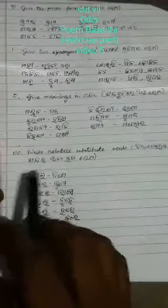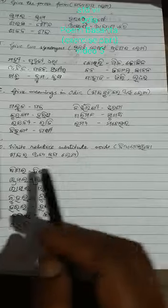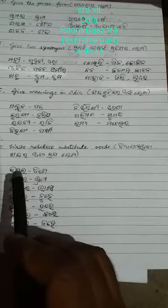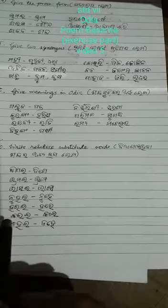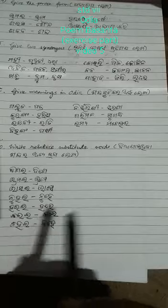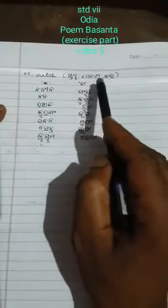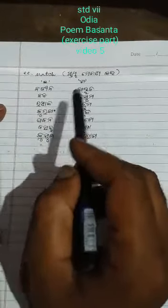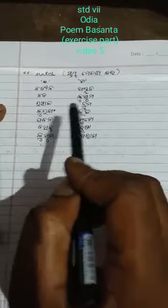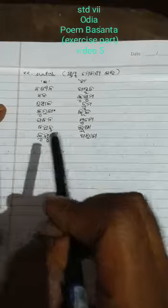Now come to question number 10: Write relative substitute words. Now come to the next question: Pabana — mukhe, basanta — bhusa, kusuma — paraga.